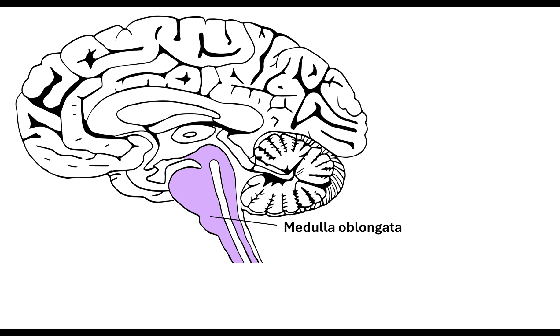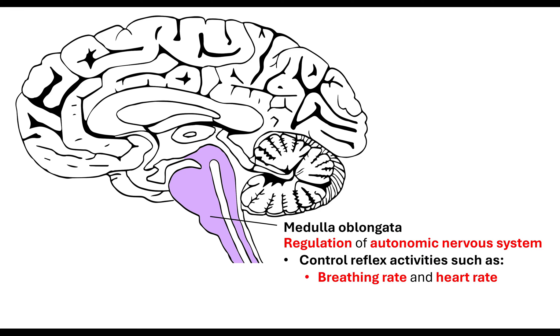So let's just remind ourselves about the medulla oblongata. The medulla oblongata is a part of the brain which is located just at the bottom and I've identified it in purple here. Now the medulla oblongata is about regulating your autonomic nervous system and it does that by controlling the reflex activities such as your breathing rate and your heart rate. Now we're going to focus on the heart rate in today's lesson but it does do other things like swallowing, peristalsis, coughing.